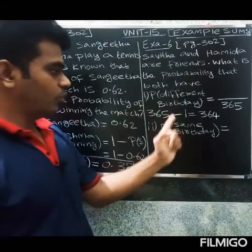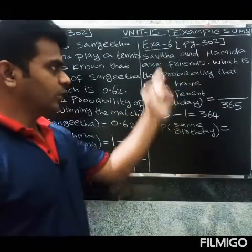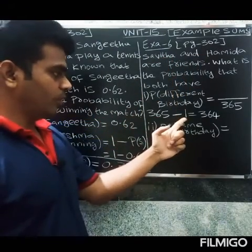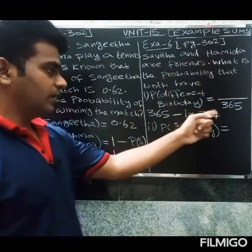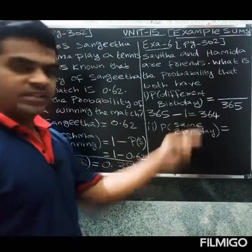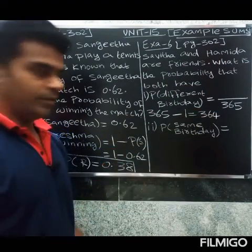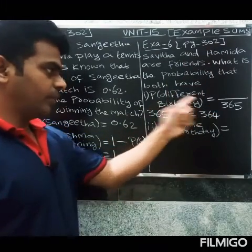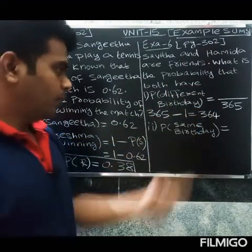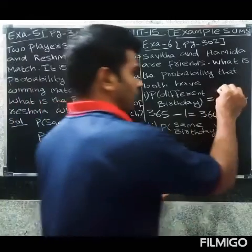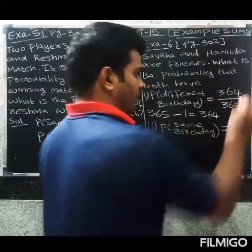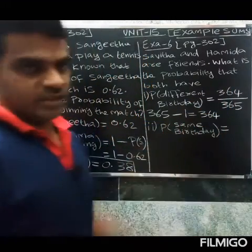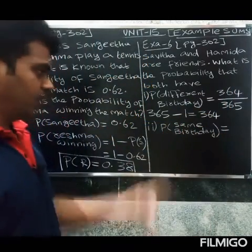If Savitha's birthday is on one day, Hamitha can have another possibility from the remaining days. So the probability of a different birthday is 364 divided by 365.